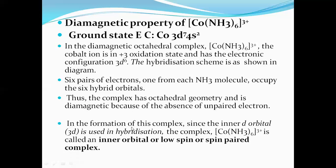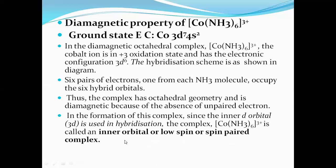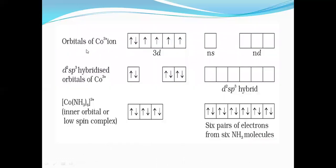Inner d orbitals are used, hence it is called an inner orbital complex or low-spin complex. To explain diagrammatically: the ground state of cobalt is 3d7 4s2. Since cobalt is in the +3 state, 3 electrons are lost — 2 from 4s and 1 from 3d — giving the configuration 3d6.